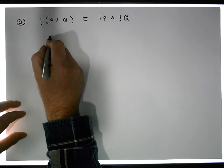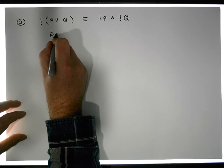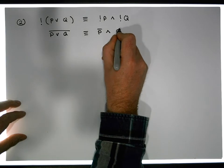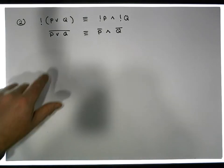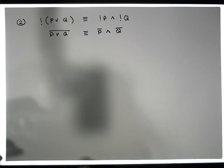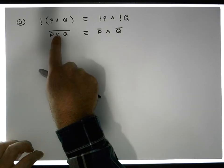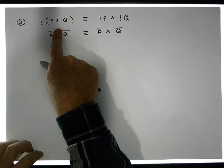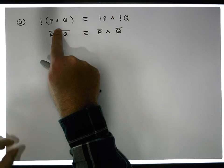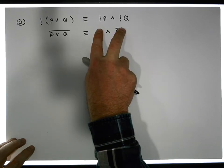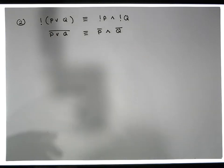De Morgan's second law says that the negation of p-or-q is equivalent to the negation of p and-ed with the negation of q. Using bar notation: p-or-q bar is equivalent to p-bar and-ed with q-bar. There's a useful little rhyme: when you have a negation across an operator, you can break the bar — the bar is broken into two — and you flip ors to ands and ands to ors.